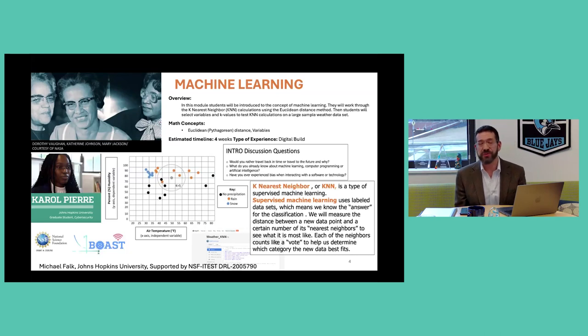One of the modules is a machine learning module, where we introduce students to using a k-nearest-neighbor method of supervised machine learning to answer some questions about weather prediction in this particular case. The intro discussion questions initially are just meant to prompt some open discussion about something that's maybe disconnected, but then asks what do you already know about machine learning, computer programming, and artificial intelligence so they can share things that they've already gleaned? And then ask them whether they've ever experienced any bias when interacting with software and technology so they can see how these things impact their own lives. The image on the left shows Carol Pierre, she's a graduate student of ours in cyber security, so hoping that they can connect with role models like them in this field. And then they go on to solve this problem using some Java code. I think thinking about not just how we're advancing the field, but how we're reaching into our surrounding communities to find on-ramps to these fields is really important.